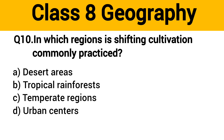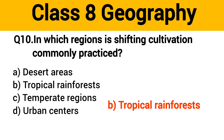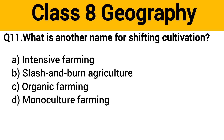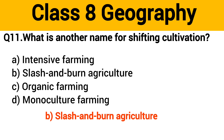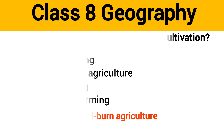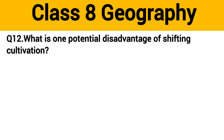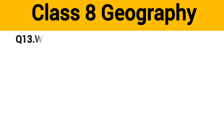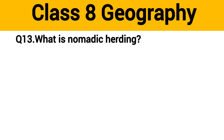Question number 9: What is shifting cultivation? The right answer is option B: rotating fields after harvest. Question number 10: In which region is shifting cultivation commonly practiced? The right answer is option B: tropical rainforest. Question number 11: What is another name for shifting cultivation? The right answer is option B: slash and burn agriculture.